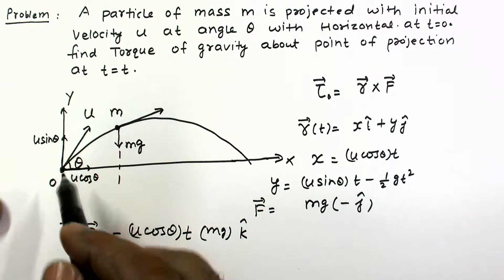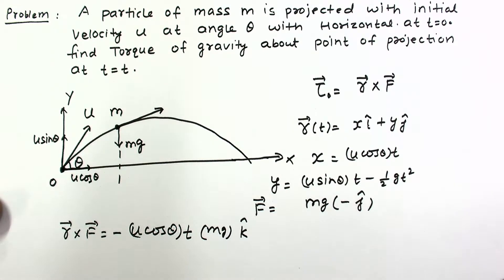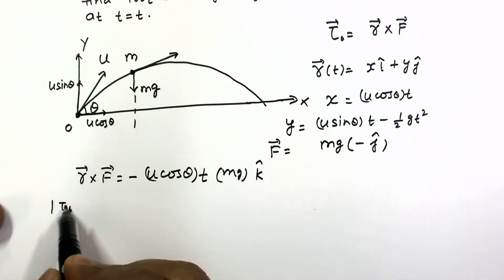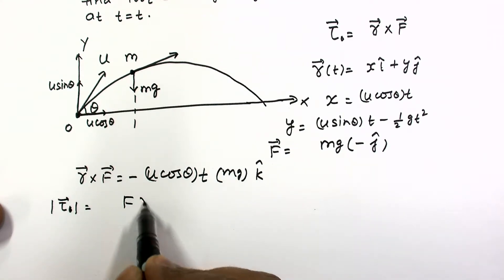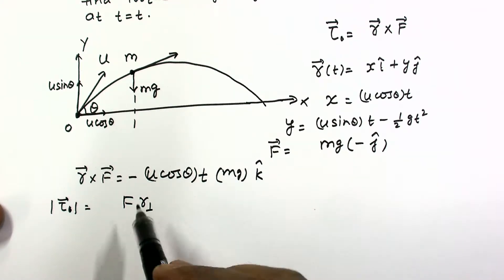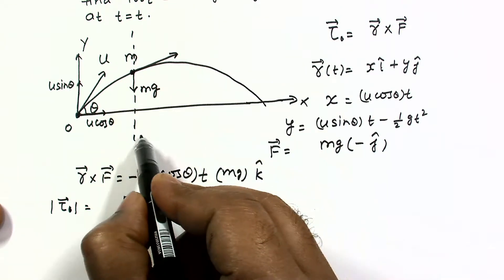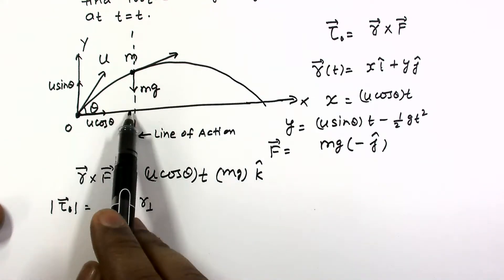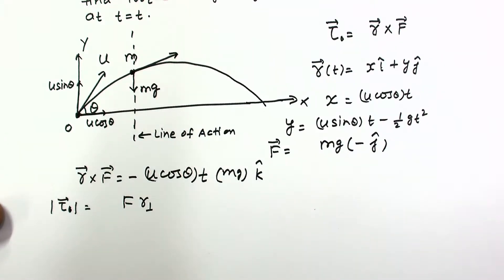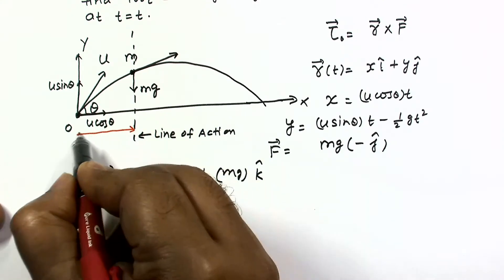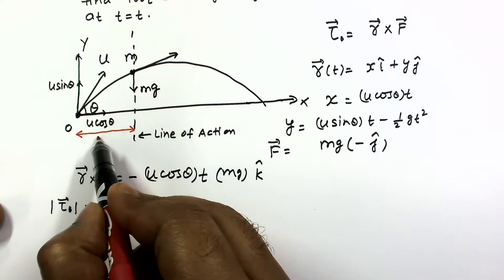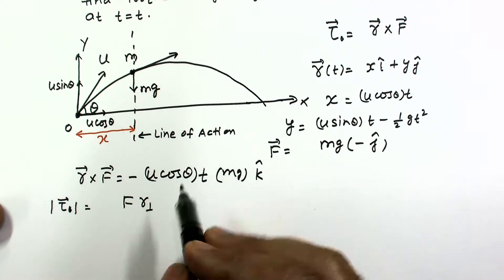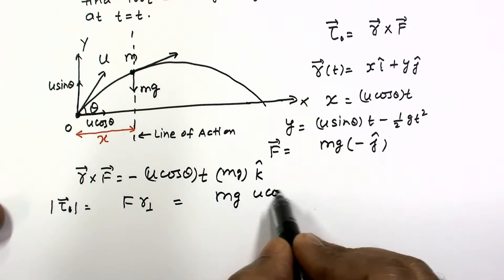X cross Y gives the Z-axis, and minus Z is into the plane of the paper. Now by another method, we calculate the magnitude using F times r-perpendicular. For r-perpendicular, we search for the line of action of the force. The horizontal displacement is u·cosθ·t.